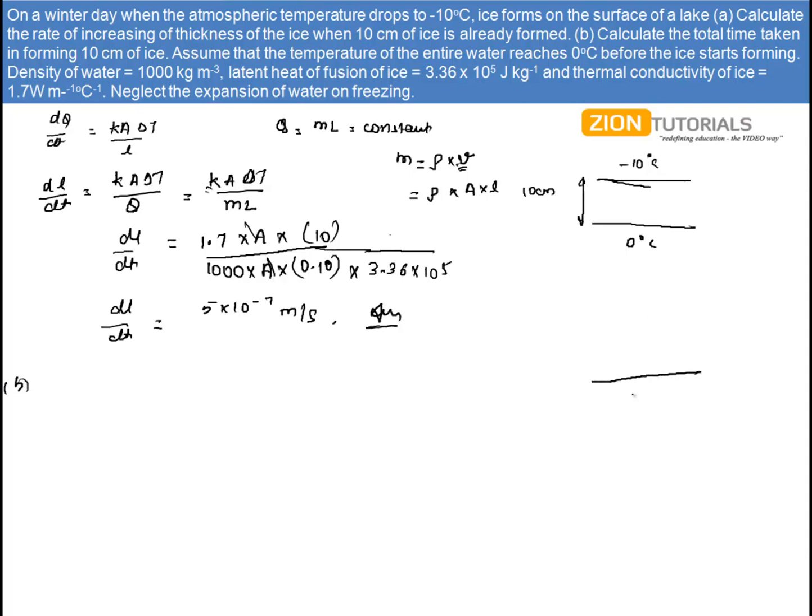Okay, now let us say that initially, at any instant of time, only x cm of thickness of ice has formed. So in this case, I can write dq by dt as KA delta T by x.